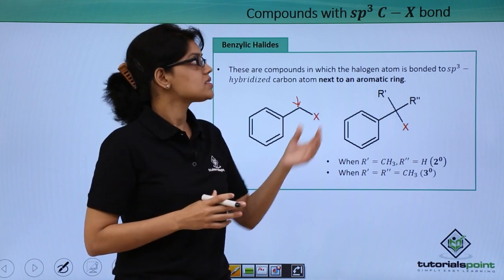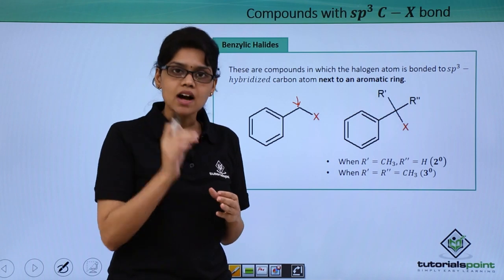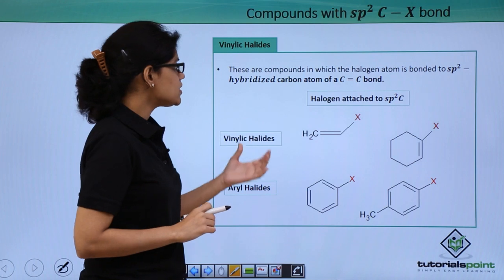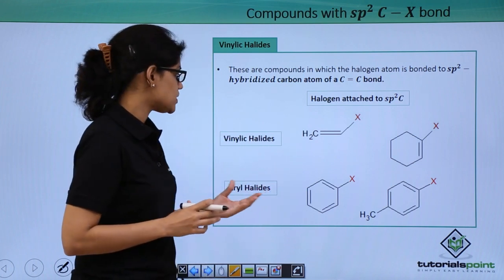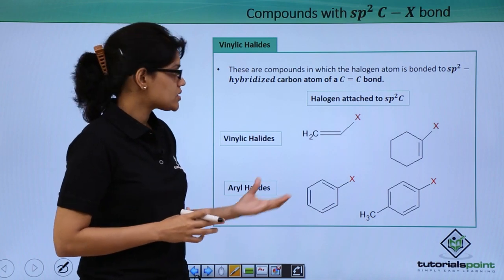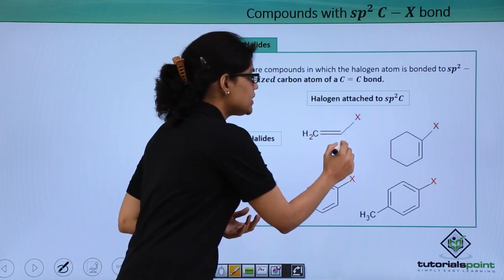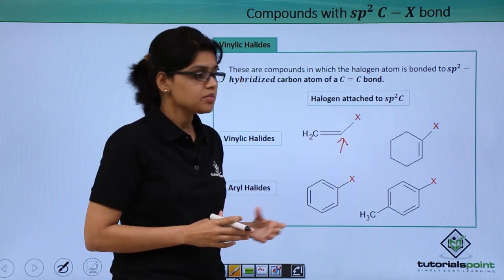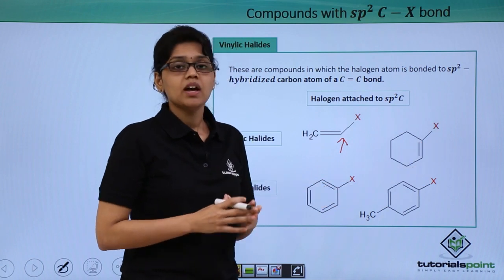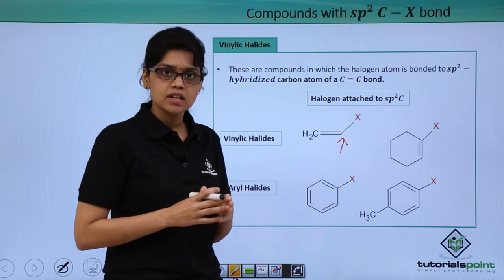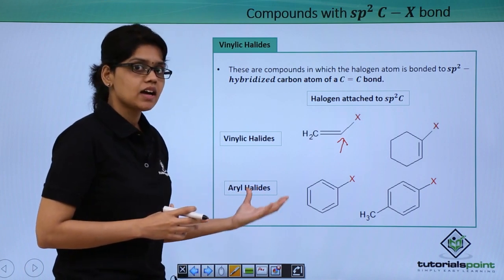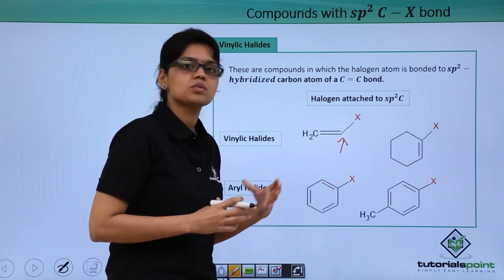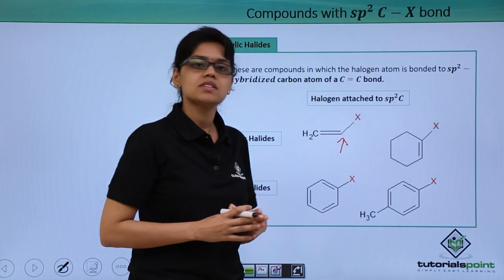The second classification is sp² C-X bond, where the carbon bearing the halogen atom has an sp² hybridization state. Under this we discuss two types of compounds: vinylic halides and aryl halides. In vinyl halides, the carbon bearing the halogen atom has sp² hybridization due to a double bond, as can be seen from these structures. In aryl halides, the carbon bearing the halogen atom also has sp² hybridization, but the double bond belongs to the phenyl ring, as seen from these structures.